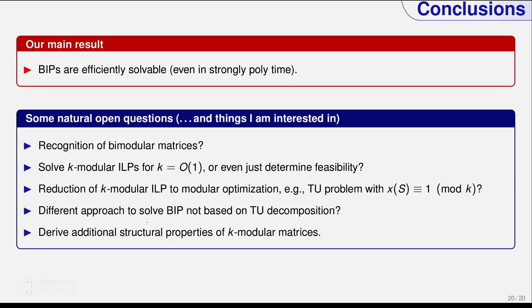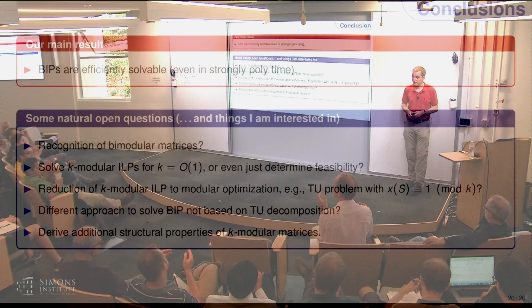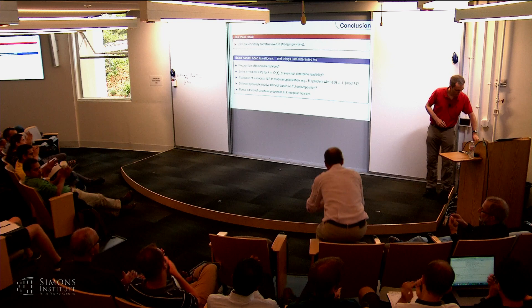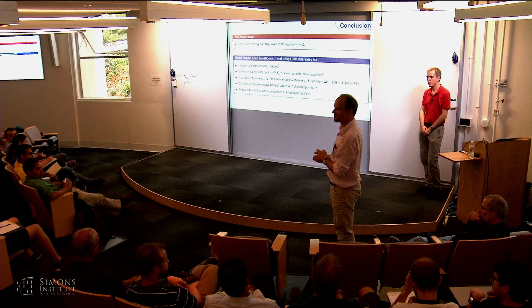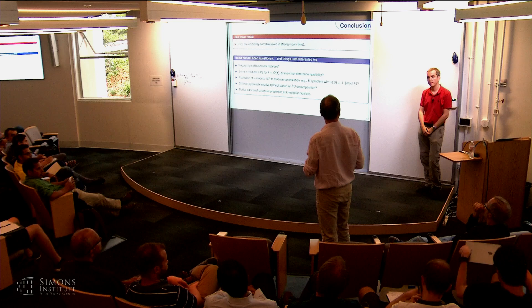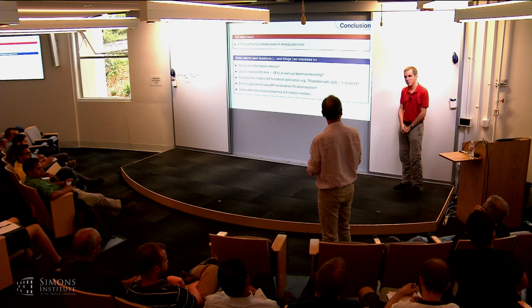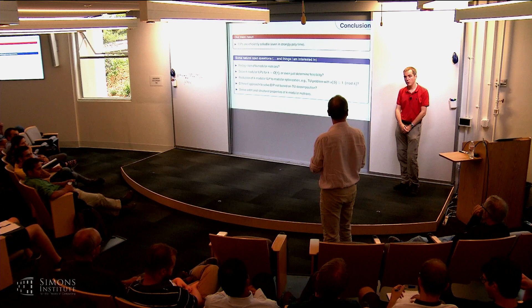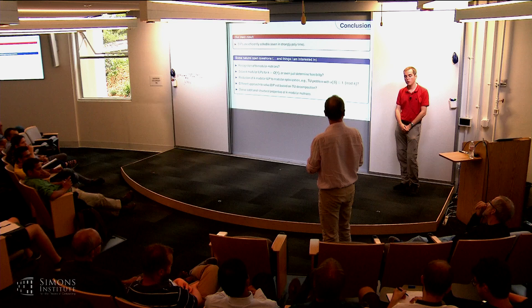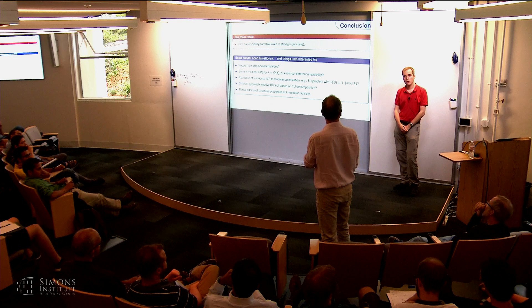Thank you very much. [Q&A] Question: When does it start to be NP-hard in terms of the largest subdeterminant? Answer: For any constant epsilon, if the minors are n to the power of epsilon, it's NP-hard. I don't know of anything stronger — for example, whether log n is hard is not known, but potentially the bound can be improved.